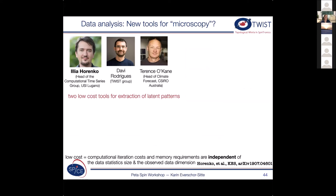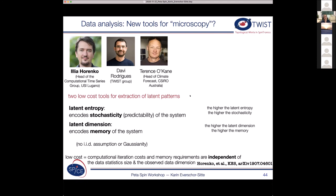So what we have been working on is to develop two low cost tools. And low cost meaning in that sense that if you have more and more data, these iteration steps that you need to do in your algorithms are independent of this data statistic size. And we developed two tools, which we called average latent entropy and average latent dimension. And they tell you something about the stochasticity and about the memory of the system.